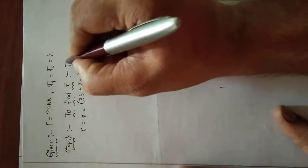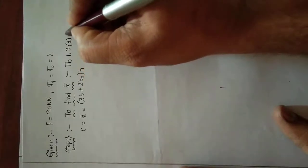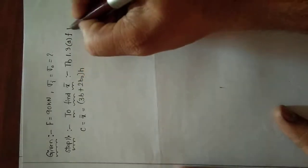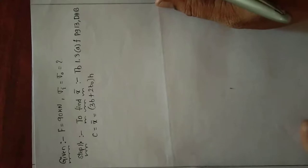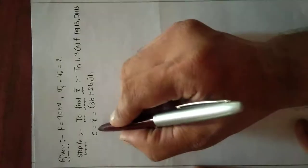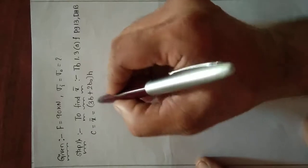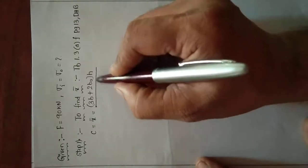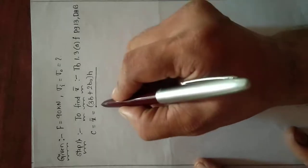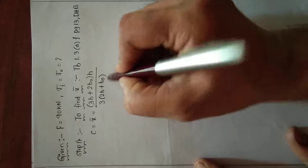From table 1.3, figure number F, page 13 from the data handbook. So we have c — from the data handbook we need x-dash. So x-dash equals (3b plus 2b-naught) times h, whole divided by 3 times (2b plus b-naught).